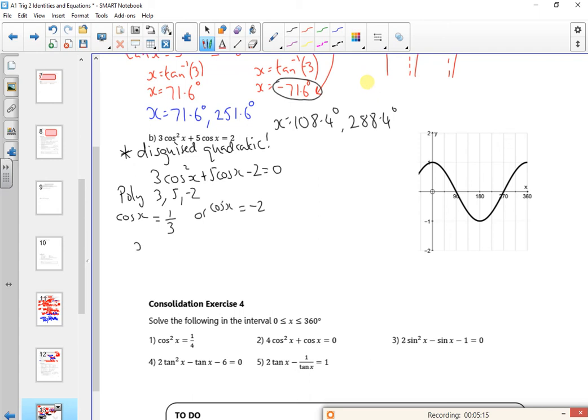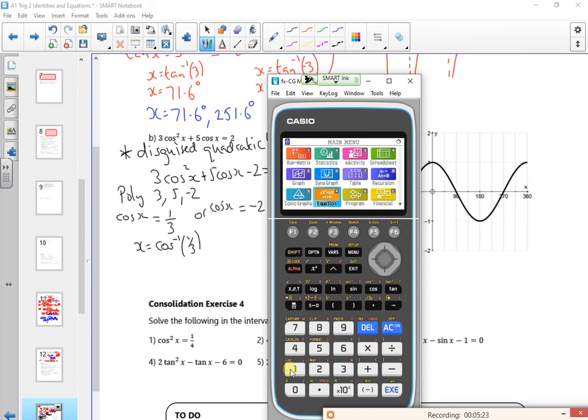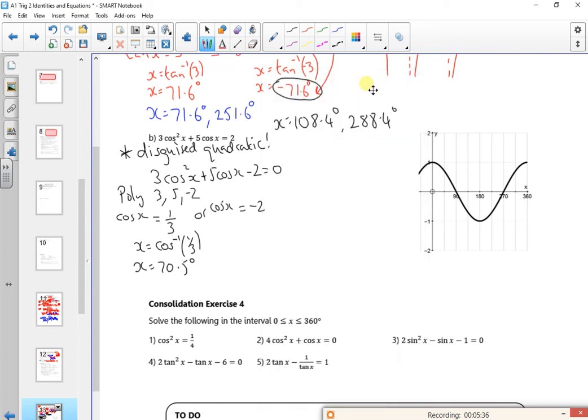All right, so let's do the inverse cos first. So cos to minus one of a third. So let's go menu one. So this might be jumping a bit too quick, but don't worry, we have the lesson to have a look as well. So that's 70.5. Now that's going to relate to a line which is at one third, which is in there at one third. And if you look, there's 70.5 and there's the other one. So what about this one at minus two? A line at minus two doesn't hit it.